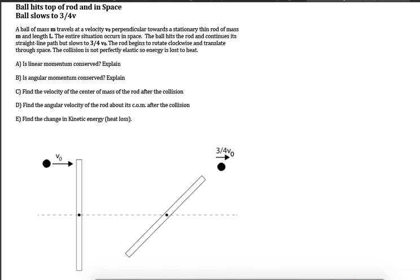The first question is a conceptual question: is linear momentum conserved? Linear momentum is conserved when there are no net external forces on the system. The system is the ball and the rod, and there is no gravity, no hinges, no other forces involved. So yes, linear momentum is conserved. Angular momentum is conserved when there is no net external torque. Torque is R cross F, and since there are no external net forces, there can be no net external torques. So angular momentum is also conserved.